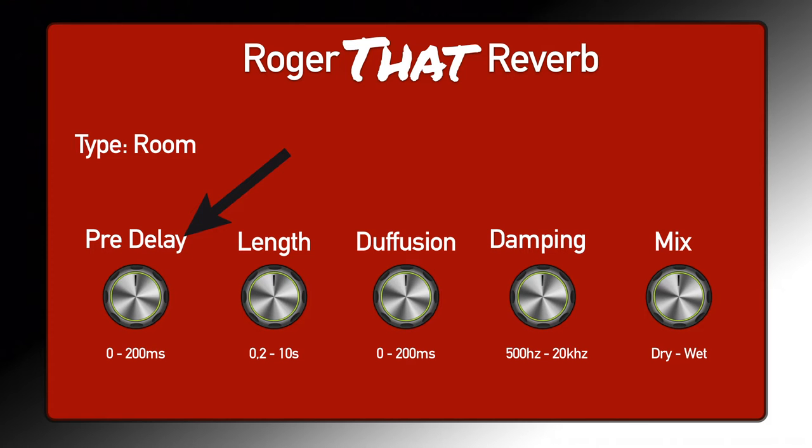Let's go through the most common settings on a reverb. First is the type, which we've already covered. Pre-delay is the dry signal before the reverb starts — it simulates how far from the wall you are when generating the sound before the first bounce. The less pre-delay you have, the smaller and tighter the room feels. The longer the pre-delay, the more dry signal you let through before the reverb comes.